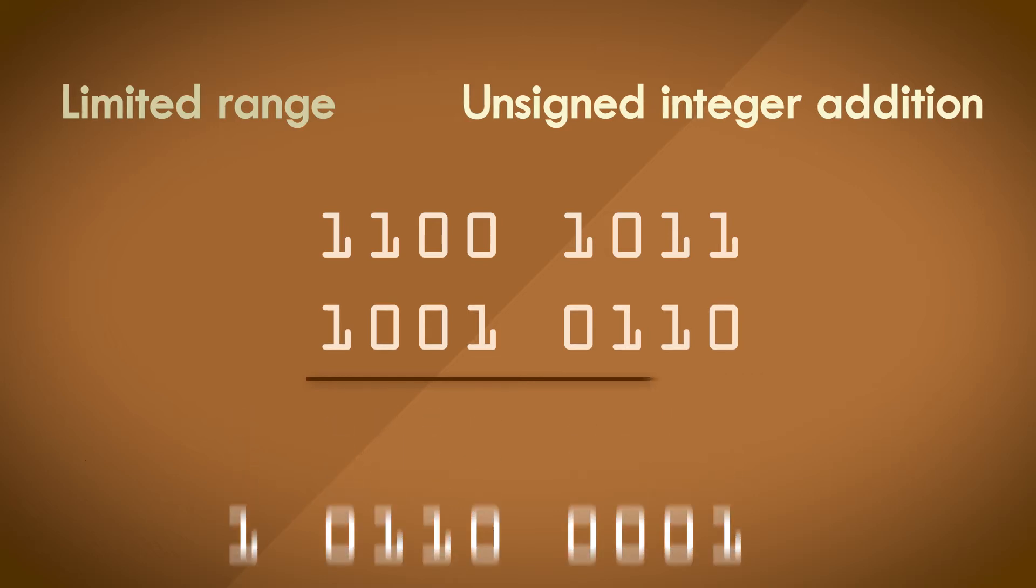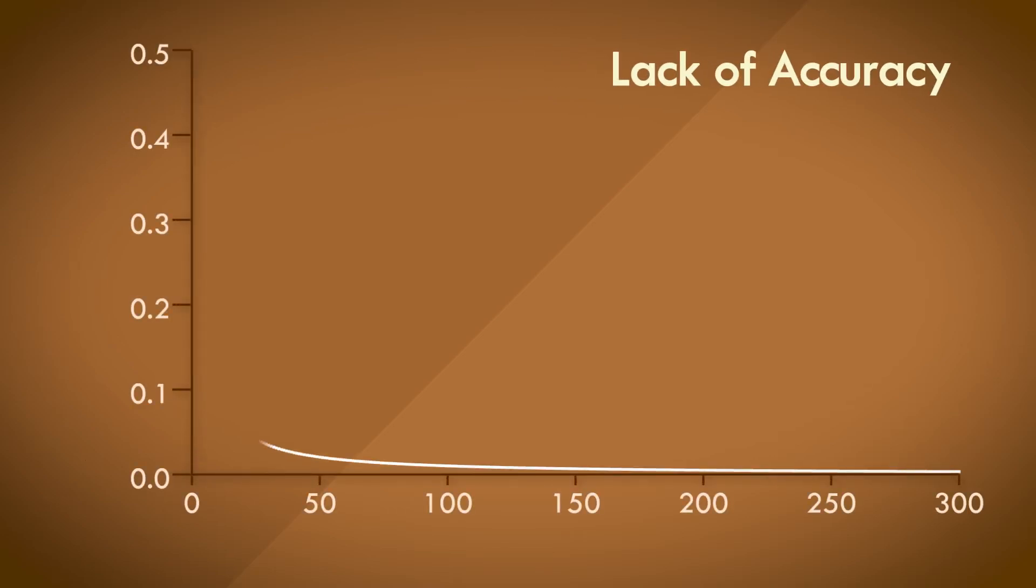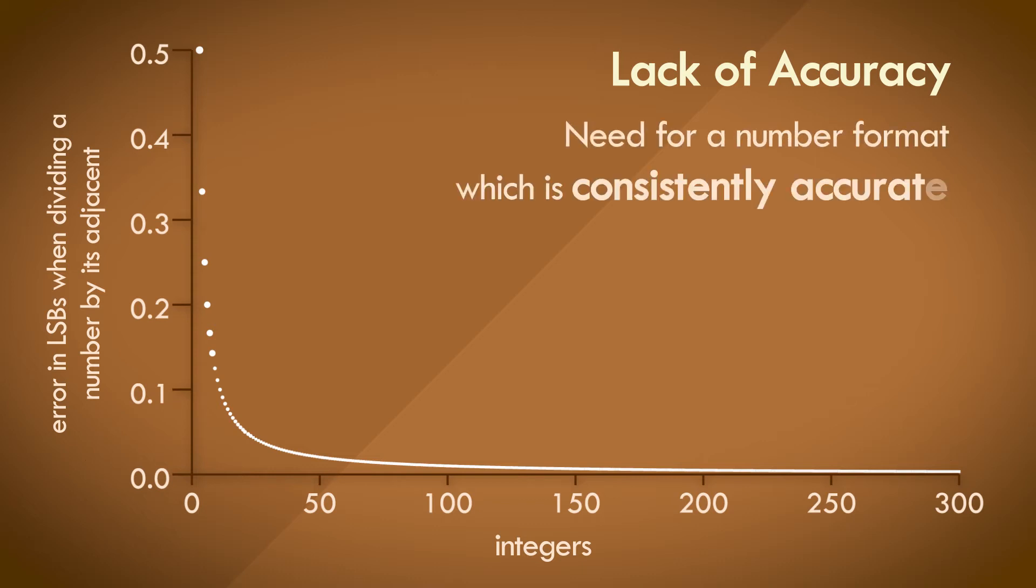The other issue that we saw was with accuracy, or rather the lack of accuracy when dealing with division operations. Furthermore, the accuracy is significantly lower at the lower end of the range for fixed point numbers and isn't so much of an issue at the higher end. We need a number format where the accuracy is consistent across the full range of numbers. Let's try to address these two issues: range and accuracy.